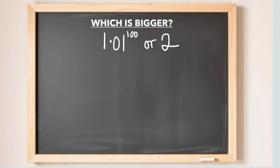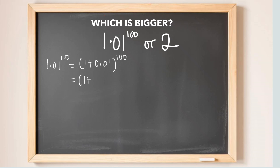In this problem, we would like to see which of these two values is bigger. We have 1.01 to the power of 100, which equals 1 plus 0.01 to the power of 100. This can be written as 1 plus 1 over 100, to the power of 100.